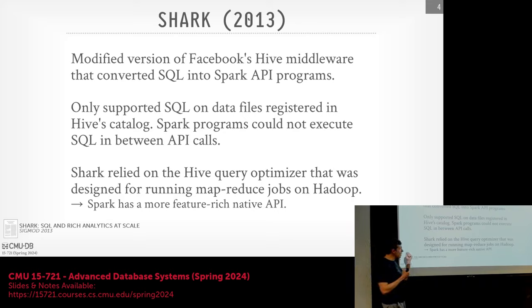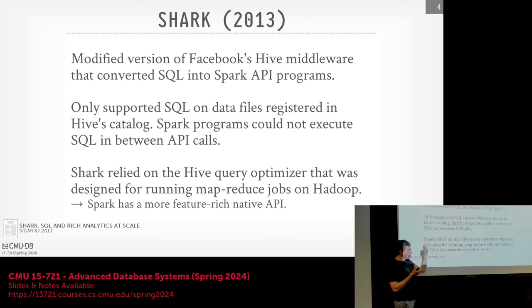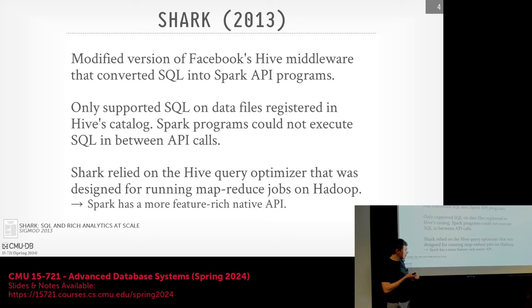Another challenge was that Shark was based on Hive, and the Hive query optimizer was designed for picking the best query plan to generate MapReduce jobs. They had to contort it to work in Spark, which had a more expressive API — MapReduce only exposed map and reduce functions, so queries generated through Shark were not as efficient as hand-written ones because Hive's optimizer wasn't aware of everything Spark could do. This was a stopgap solution for initial SQL support in Spark.